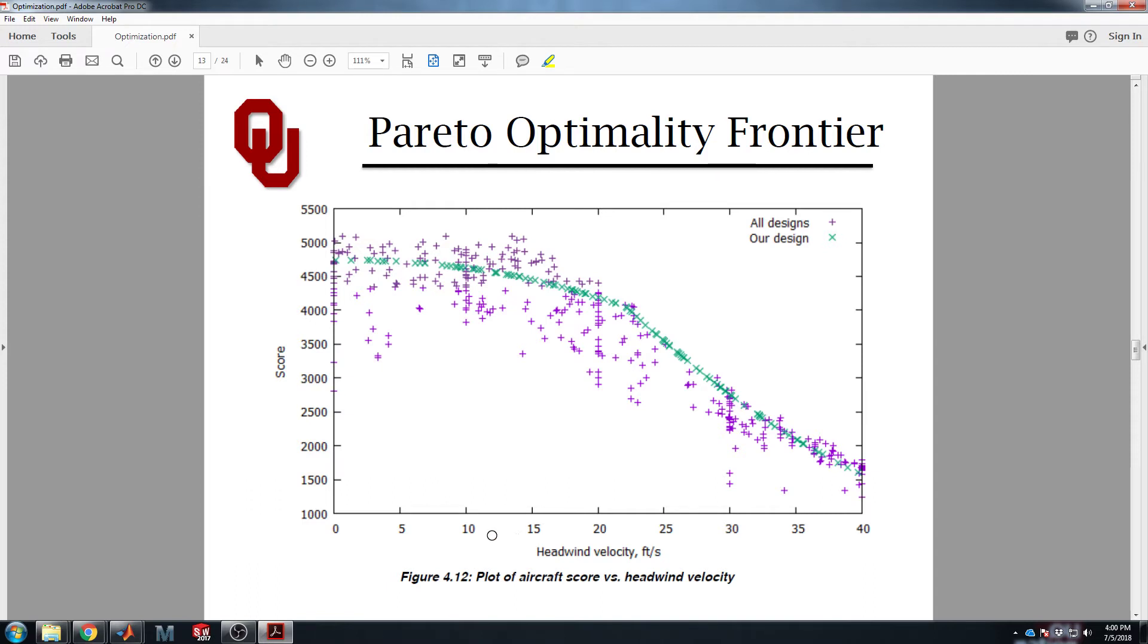So this is the variable we cannot control. We cannot control wind speed when we show up to competition. However, we know that if the wind happened to be zero miles an hour, we'd go up here to this little pink dot, figure out what design variables that contained, what the wingspan was, what the cord was, what the fuselage length was at that point, and build the plane to get the maximum score at zero headwind velocity. If we happened to show up to competition and the headwind velocity was 15 feet per second, we'd go up here and measure this point. And even though the score is similar, the actual design variable inputs to achieve a similar score could be different. Each one of those pink points is a different set of variables.